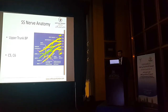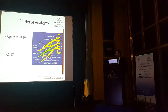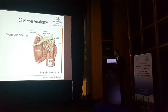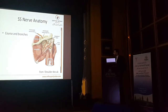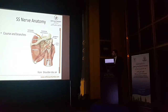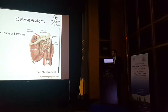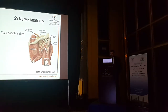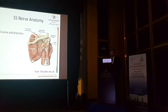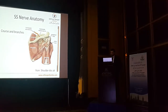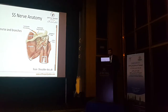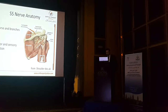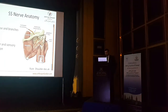Basic anatomy: the suprascapular nerve originates from the upper trunk of the brachial plexus, with the main contribution from C5-C6. It courses through the suprascapular notch under the transverse scapular ligament, with the artery passing above. It gives two branches to the supraspinatus muscle, traverses the supraspinous fossa, curves around the lateral edge of the spine of the scapula, and then passes through to supply the infraspinatus muscle. During its course it gives sensory branches to the AC joint and glenohumeral capsule. So it has both motor and sensory contributions.